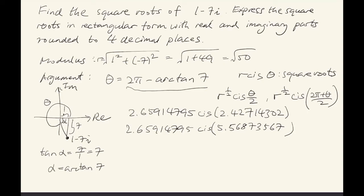So what do we need to do now? We want the answer in rectangular form, so we just need to convert each of these. To get the real part of the first one, we take 2.65914795 times the cosine of 2.42714302. For the imaginary part, we take 2.65914795 multiplied by the sine of 2.42714302. If we do that with a calculator, the first one should be approximately -2.0089 + 1.7423i, and the second one will be 2.0089 - 1.7423i.